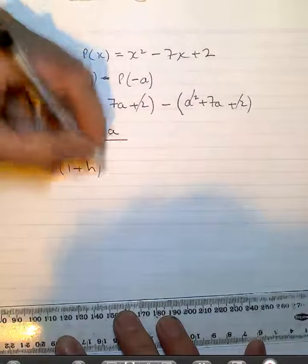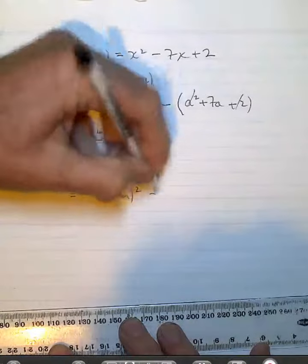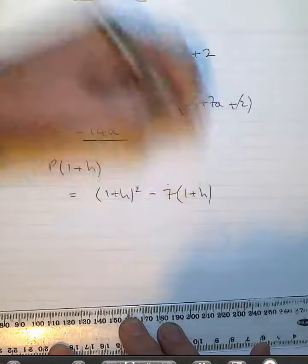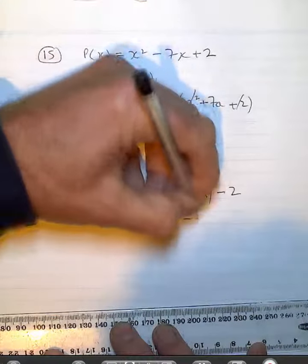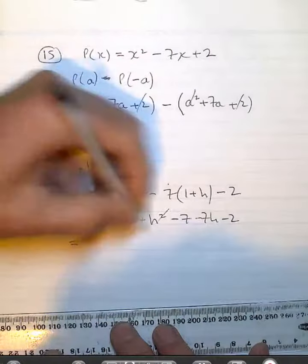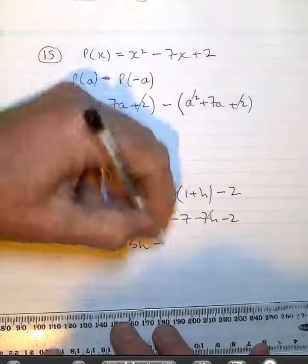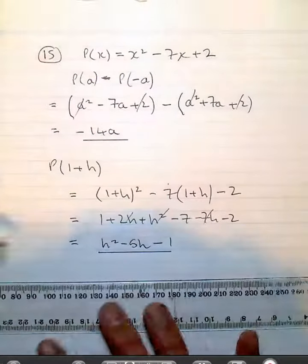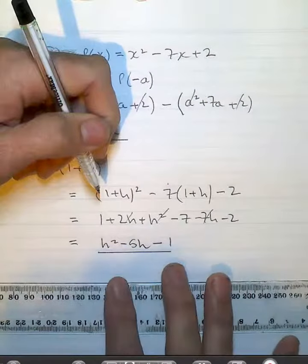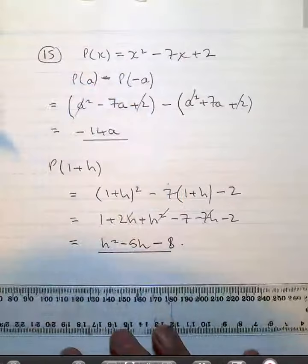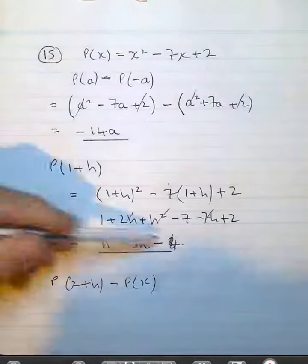The next instance, P(1+h), so I've got a bit of expansion to do there. So I get h² minus 8 as my answer in that instance. And I'm sorry, that should have been minus 4 there.